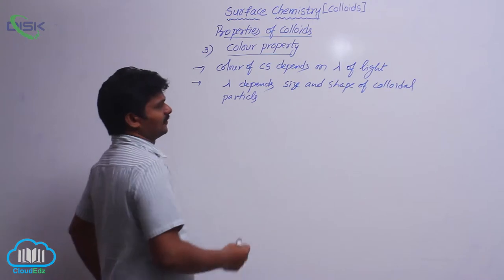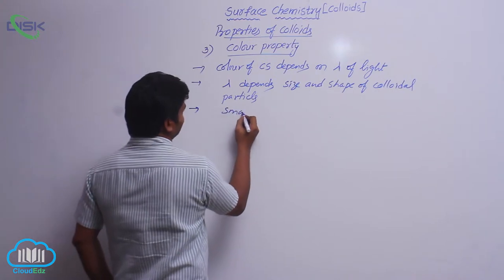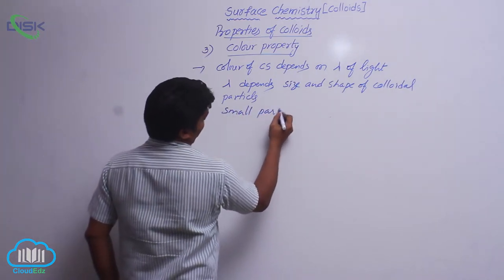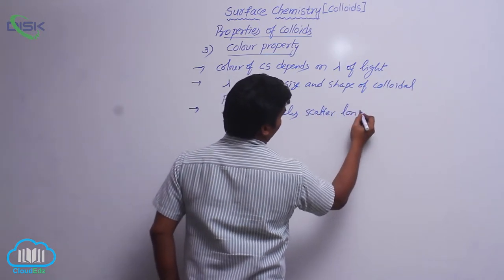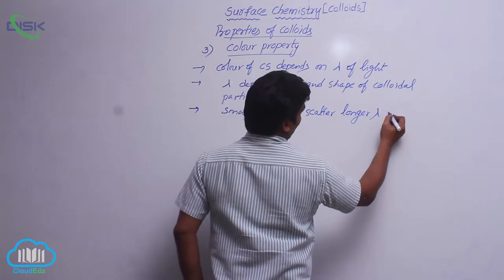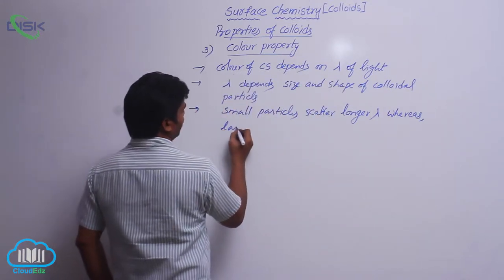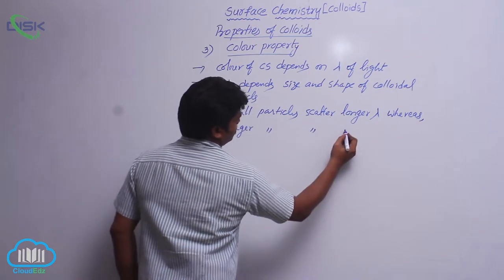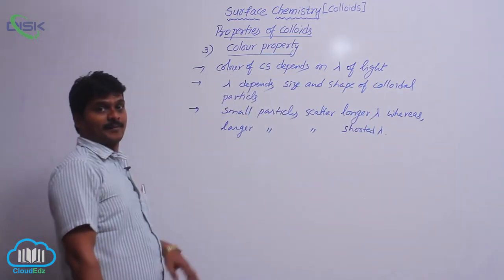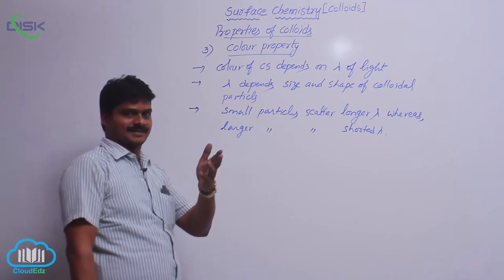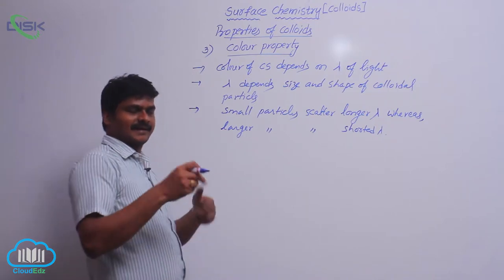Smaller colloidal particles scatter longer wavelengths, whereas larger particles scatter shorter wavelengths. If colloidal particles are smaller they scatter longer wavelengths, and if colloidal particles are somewhat bigger then they scatter shorter wavelengths.